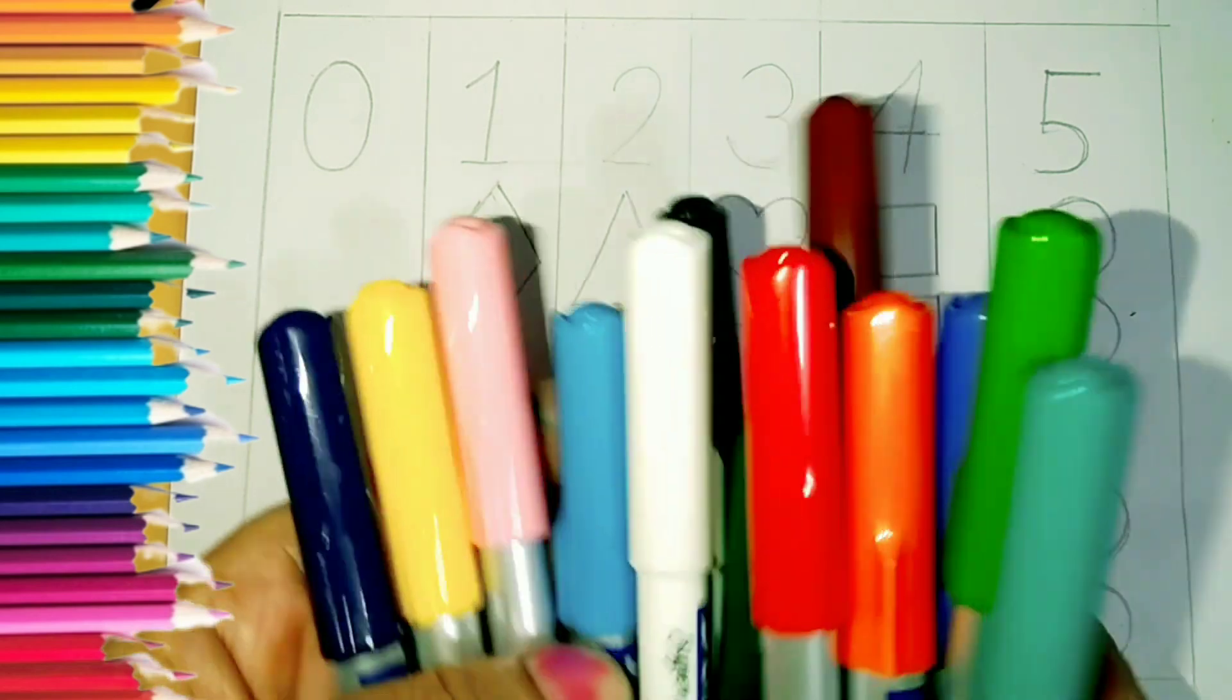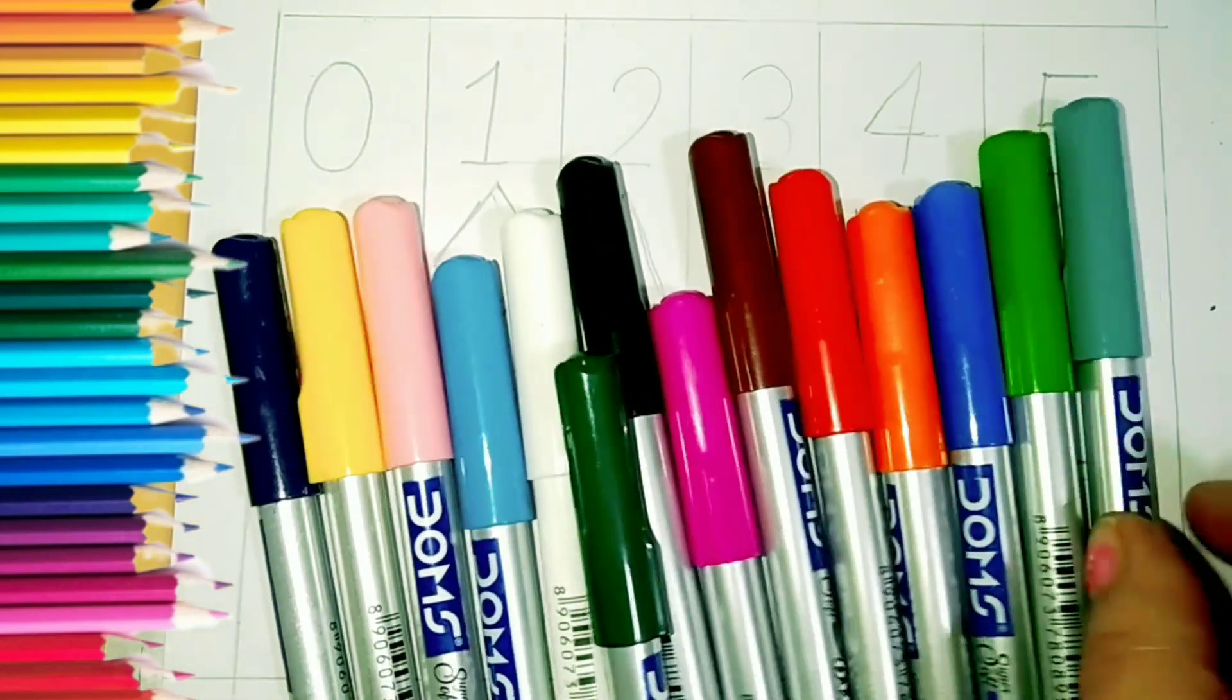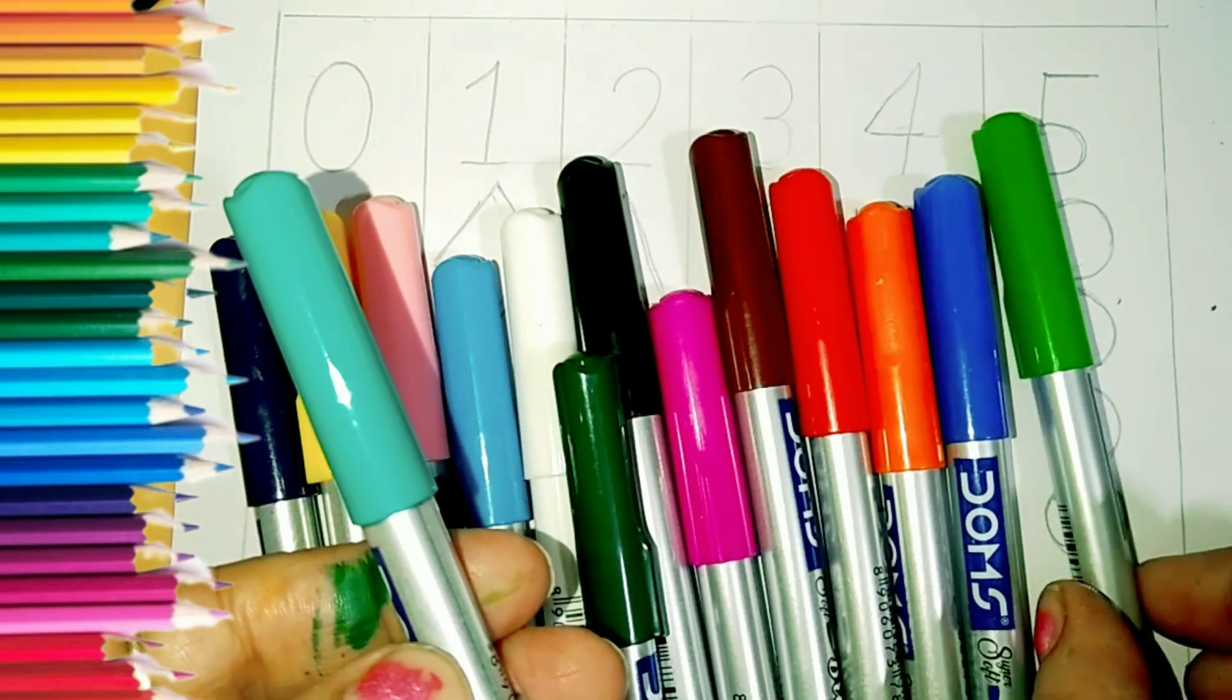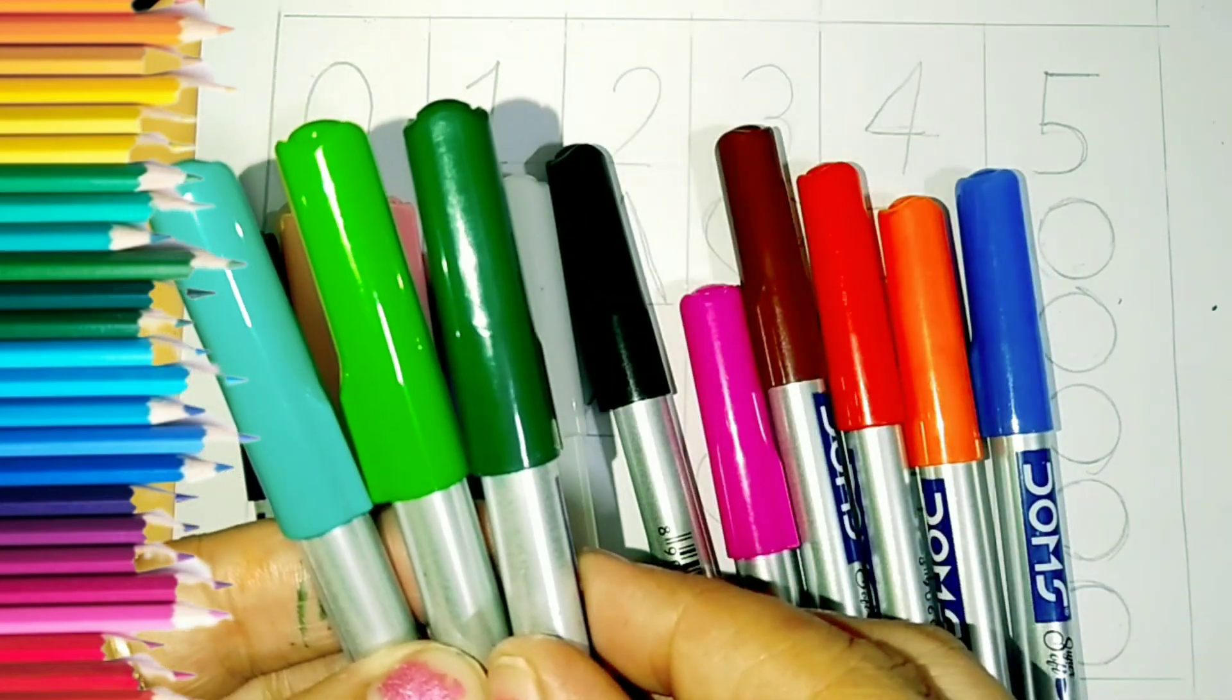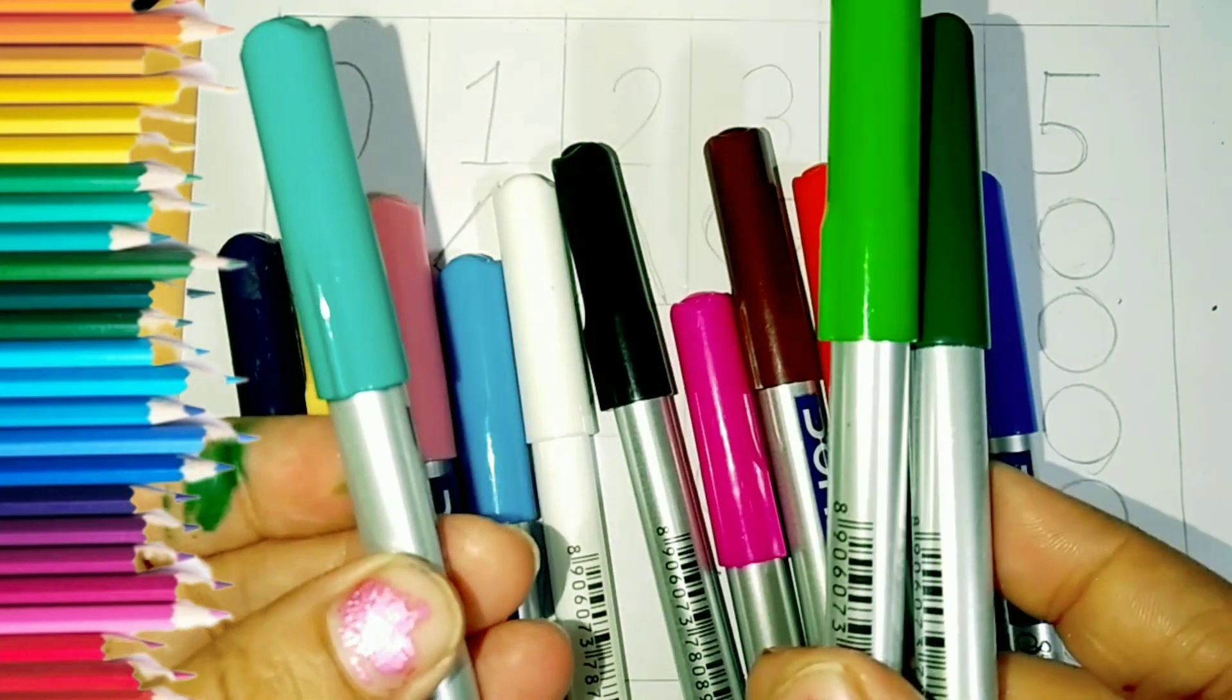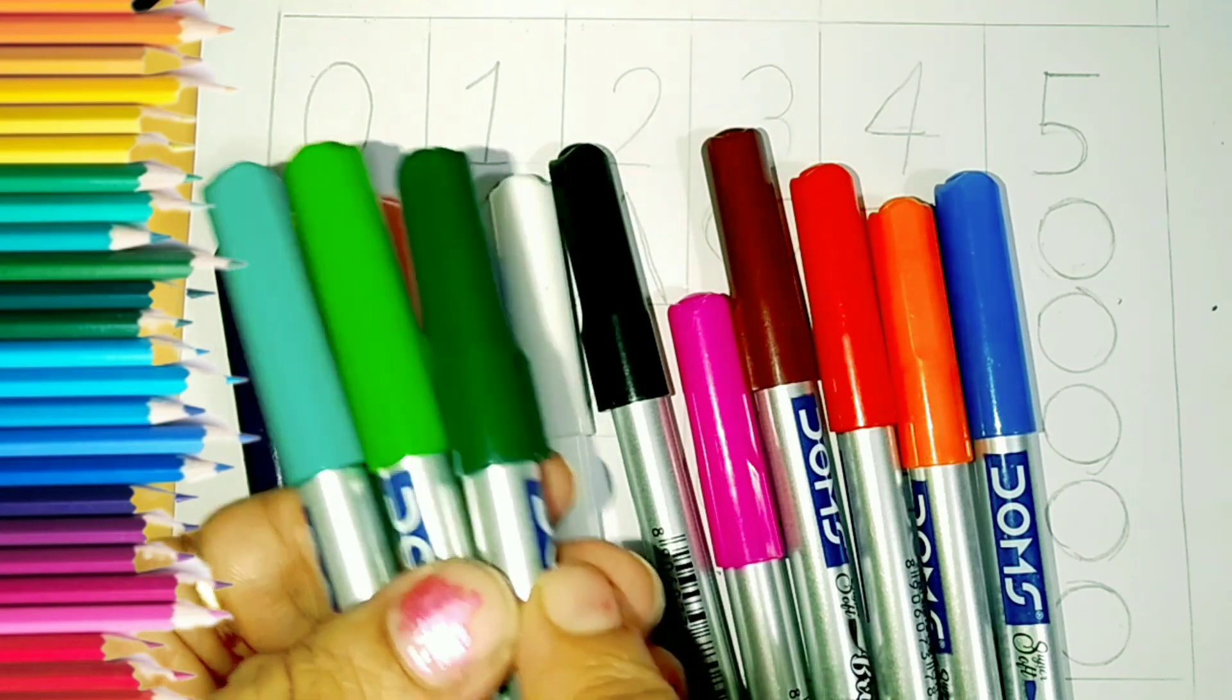Hello children, now today we learn colors. Sea green, green, and deep green. Again, sea green, green, and deep green.